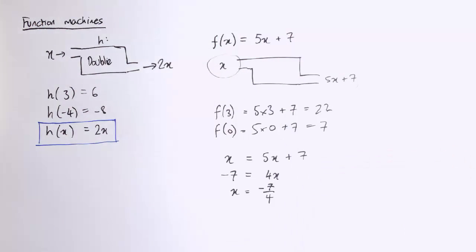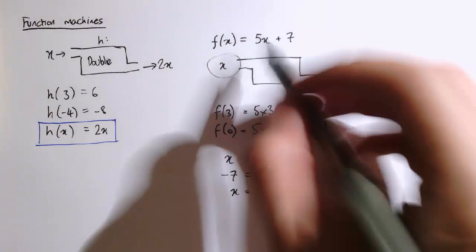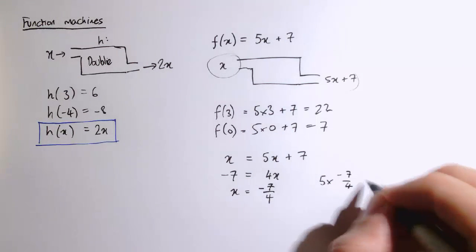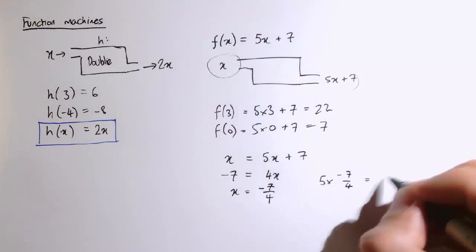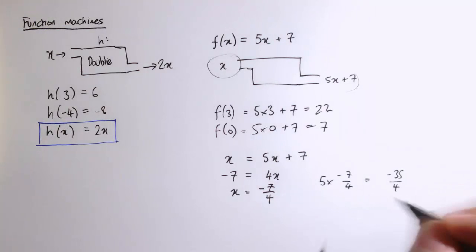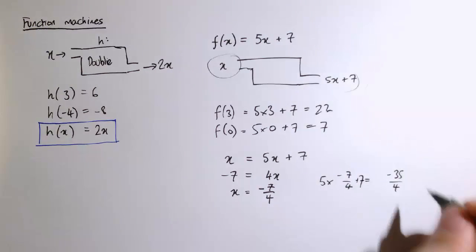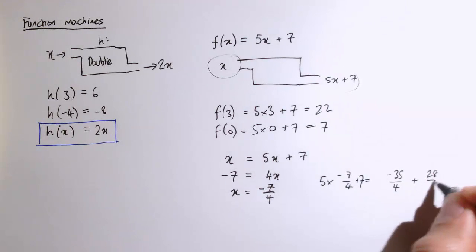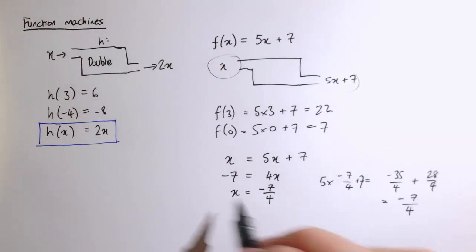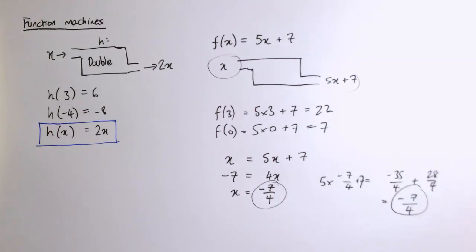And we see if we were to put that into this function machine, if you just check actually, 5 times minus 7 over 4, that's minus 35 over 4. And then we need to add 7. So let's put that in here. And 7 would be 28 over 4. So that's, when we add those fractions together we get minus 7 over 4. So we have found the input that does give that input as the output for this machine.